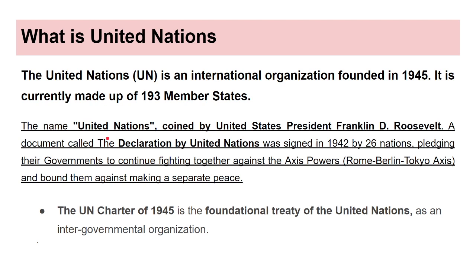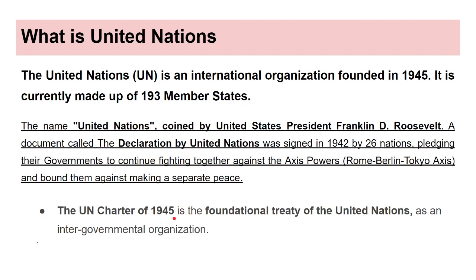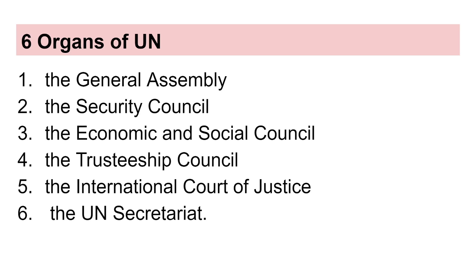The United Nations is an international organization founded in 1945, currently made up of 193 member states. The name 'United Nations' was coined by US President Franklin D. Roosevelt. A document called the Declaration by United Nations was signed in 1942 by 26 nations. The UN Charter of 1945 is the foundational treaty. The six organs of the UN are the General Assembly, Security Council, Economic and Social Council, Trusteeship Council, International Court of Justice, and the UN Secretariat. The UNHRC is a part of the Economic and Social Council.